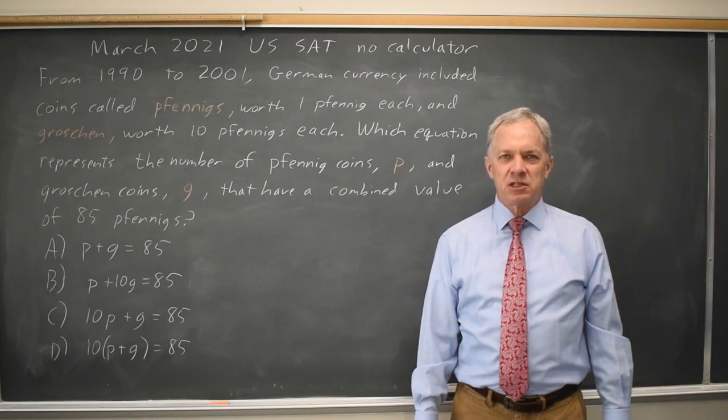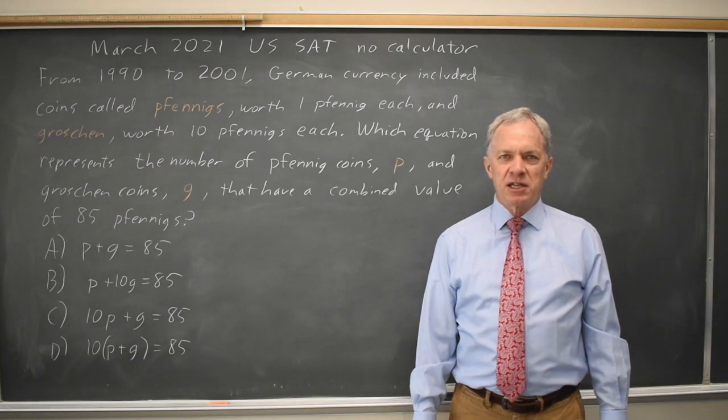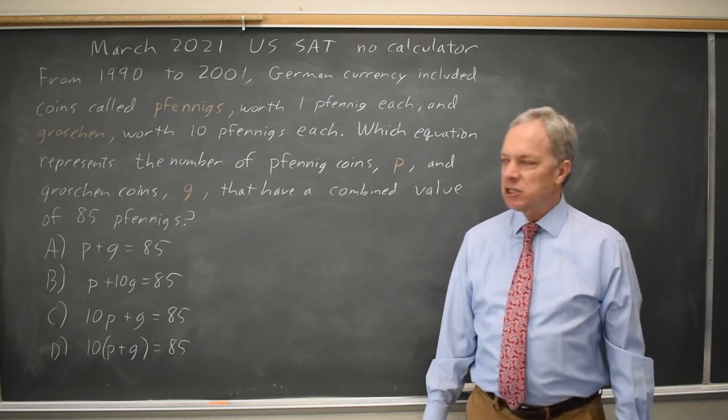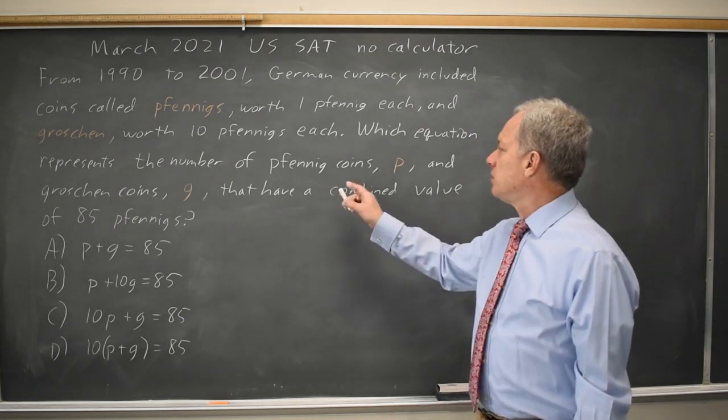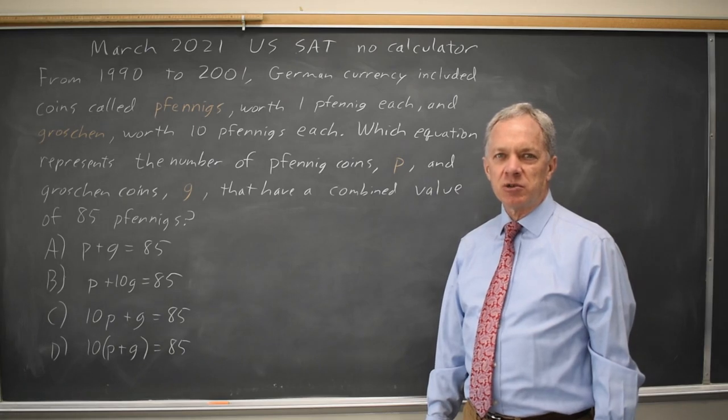I'm Dr. Roger, and this question is from the March 2021 U.S. SAT non-calculator section. The College Board is essentially asking us to convert units, convert a combination of Grosian and Fennigs to all Fennigs, where each Grosian coin is worth 10 Fennigs.